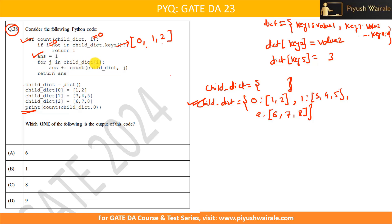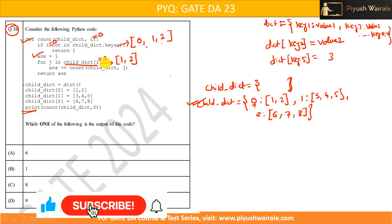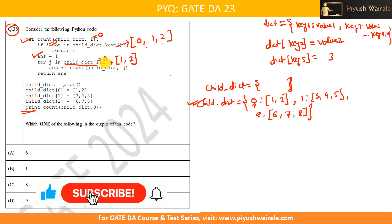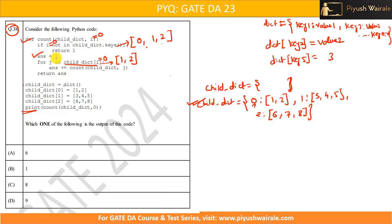Then for j in child_dictionary[i] — but the value of i is 0 here. So child_dictionary[0] will give the value corresponding to key 0. If you see, key 0 has the corresponding value [1, 2]. So this will return the list [1, 2]. Now this particular for loop is iterating over this list [1, 2]. Here ans = ans + count(child_dictionary, j). But the value of ans is basically 1. So I am writing it as 1 plus count(child_dictionary, j).